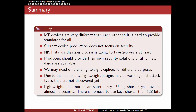This is going to take two to three years at least, so producers should provide their own security solutions until IoT standards are available, which is actually dangerous. Maybe we should pause IoT device production until we have good security, because otherwise many disasters can happen. We may need different lightweight ciphers for different purposes, though industry wants a single cipher for every purpose. Due to their simplicity, lightweight designs may be weak against attack types not yet discovered — which is why we need a huge cryptanalysis effort. Finally, lightweight does not mean shorter keys; using short keys provides almost no security, and in my opinion there is no need to use keys shorter than 128 bits.